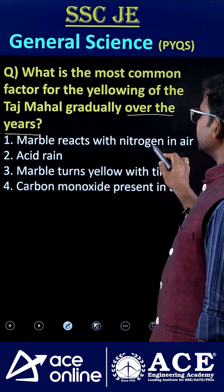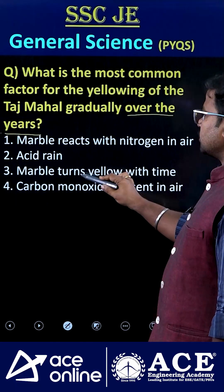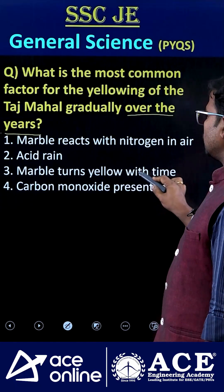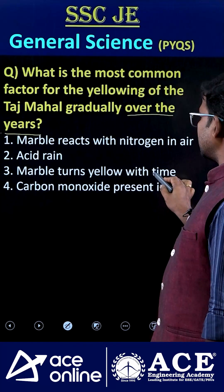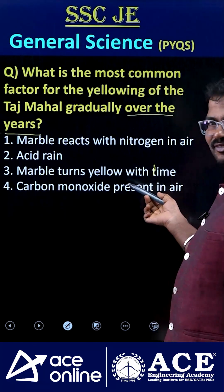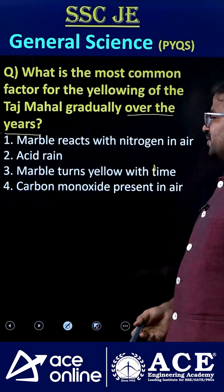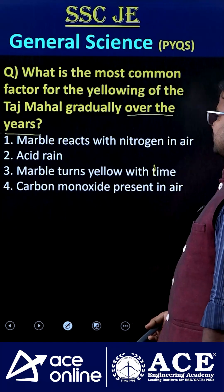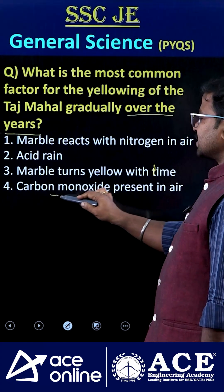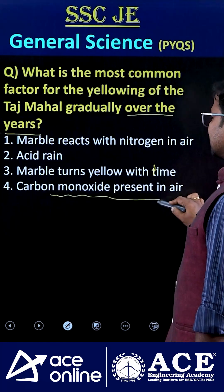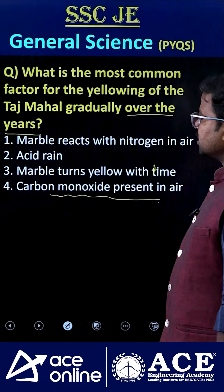The answer options are: marble reacts with nitrogen in air; acid rain; marble turns yellow with time; and carbon monoxide present in air. So which is the correct one?